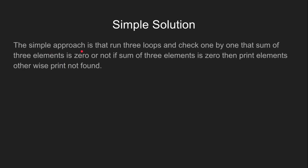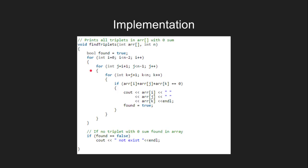A simple approach is to run three loops and check one by one that the sum of three elements is zero or not. If the sum of any three elements is zero, then print those elements, else print not found. Here is a simple implementation of this problem in C++. We are simply using three loops to find the elements having sum equal to zero.